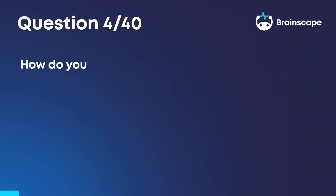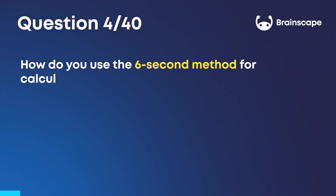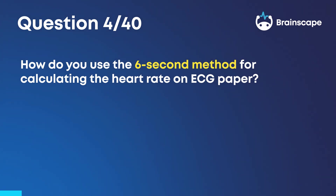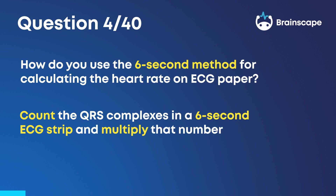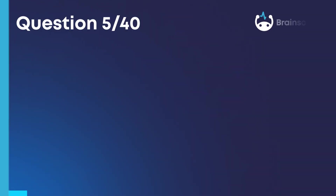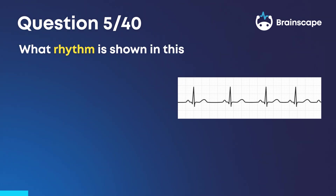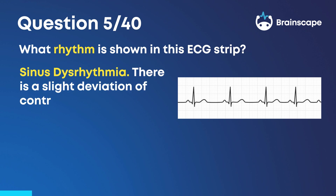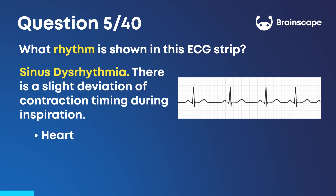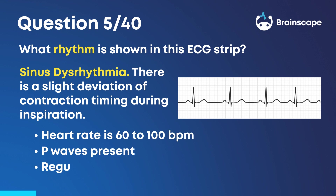Question 4: How do you use the 6-second method for calculating the heart rate on ECG paper? You count the QRS complexes in a 6-second ECG strip and then multiply that number by 10. Question 5: What rhythm is shown in this ECG strip? Sinus dysrhythmia. There is a slight deviation of contraction timing during inspiration. Heart rate is 60 to 100 BPM. P-waves are present. There is regular rhythm and a narrow QRS of less than 120 milliseconds.